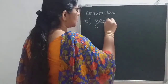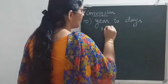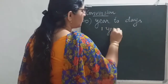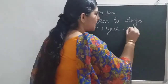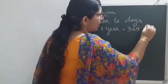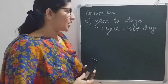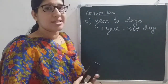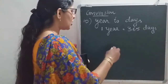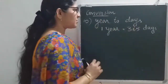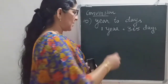The next conversion is year to days. One year has 365 days. Whenever there is a leap year, there is one extra day — that is 366 days — but here we are generally taking 365 days. Year is big, days are small, so for converting big to small we need to multiply.